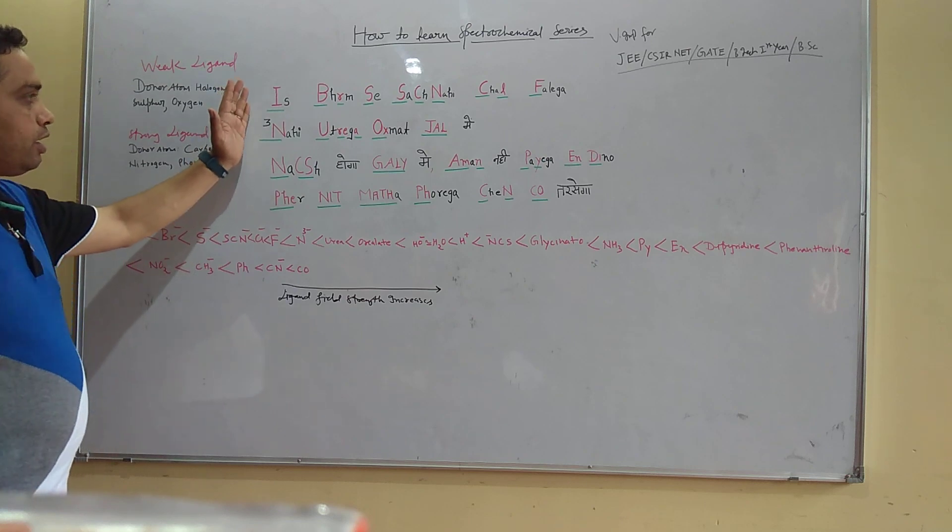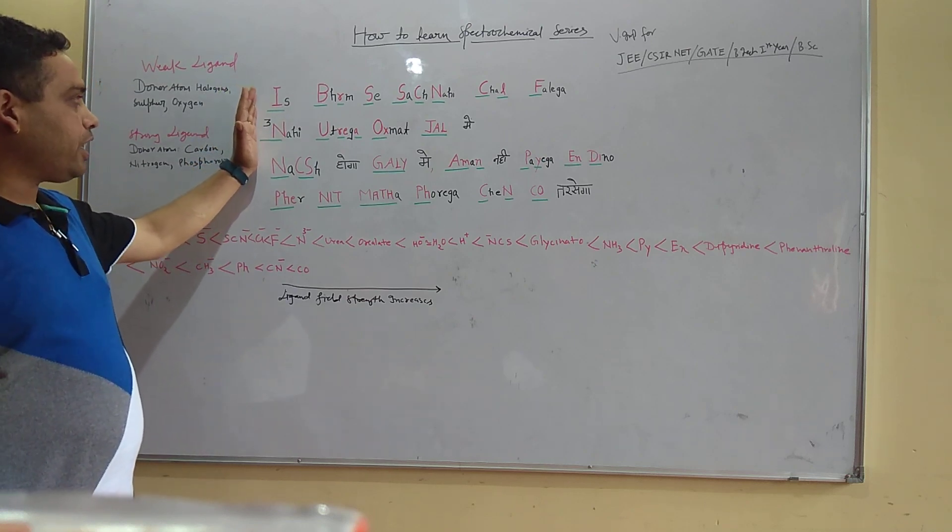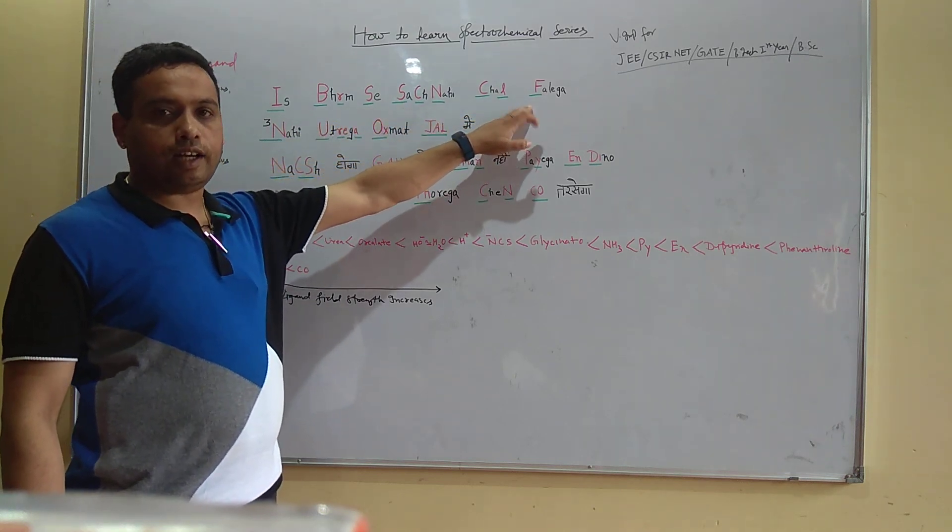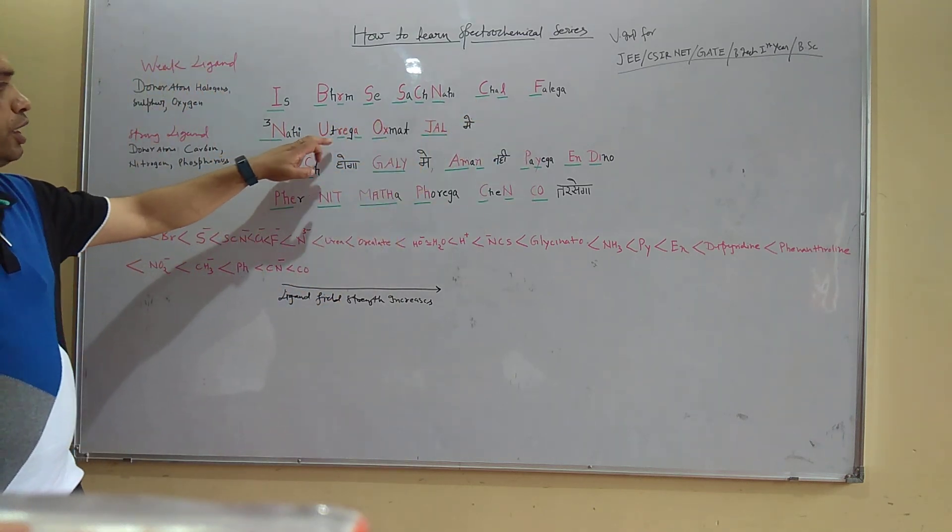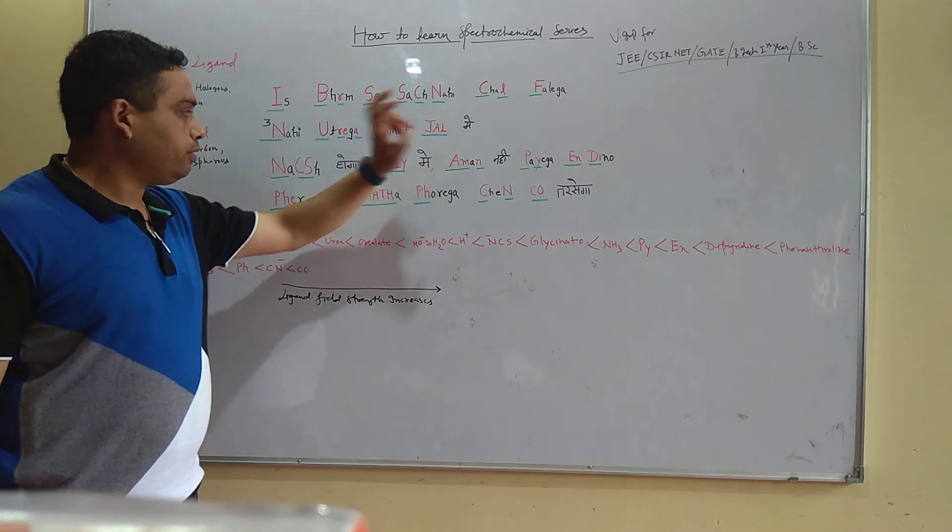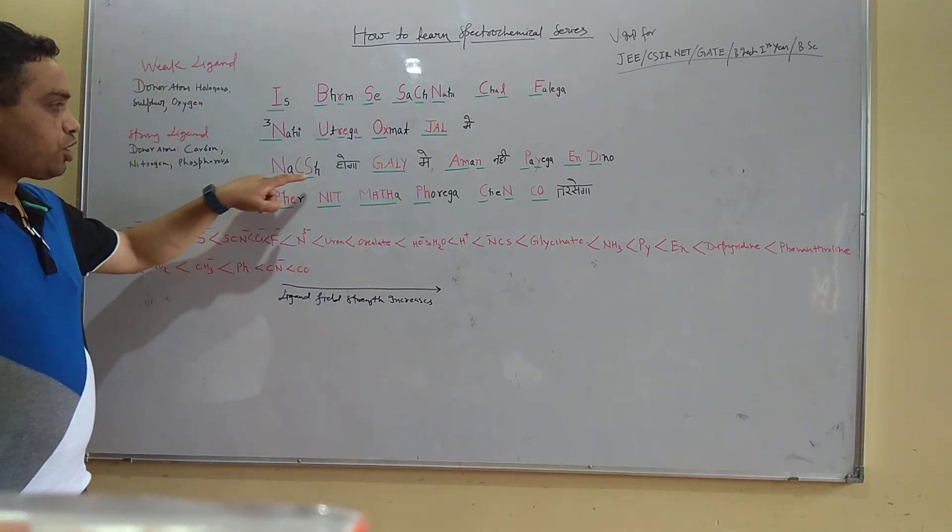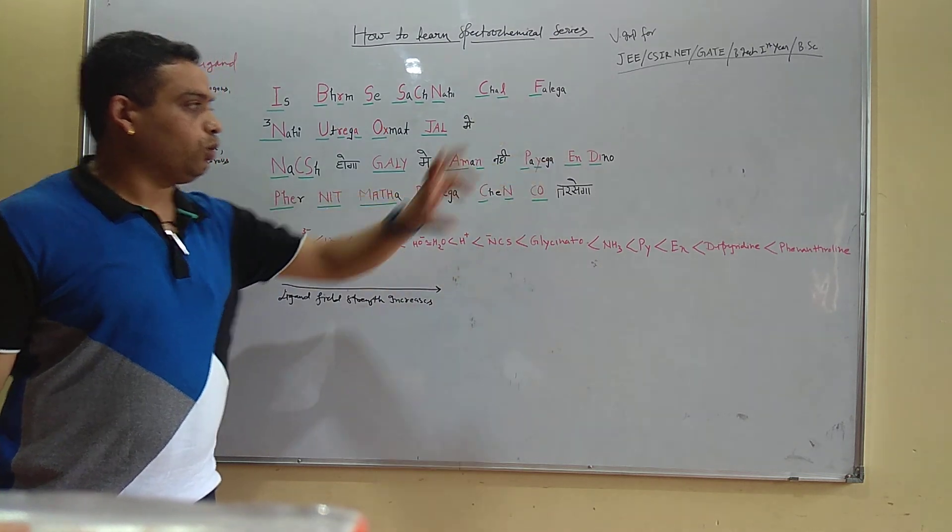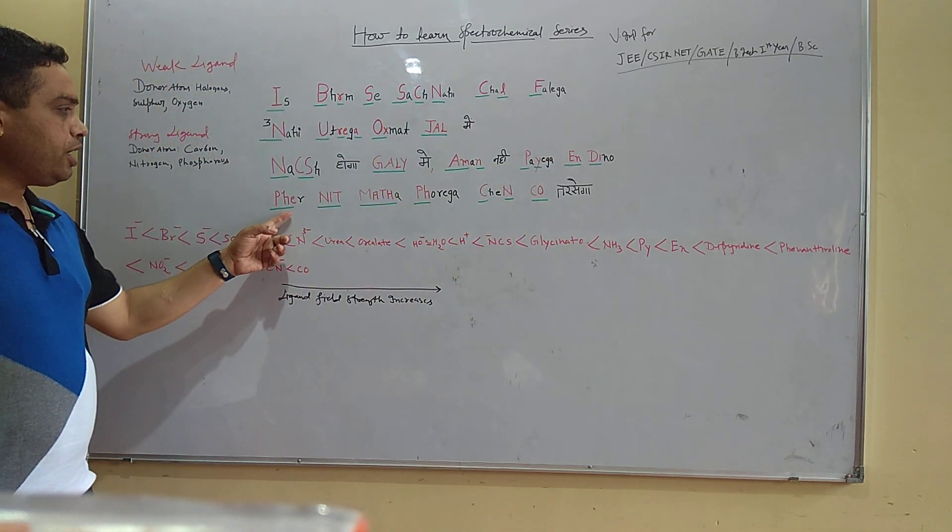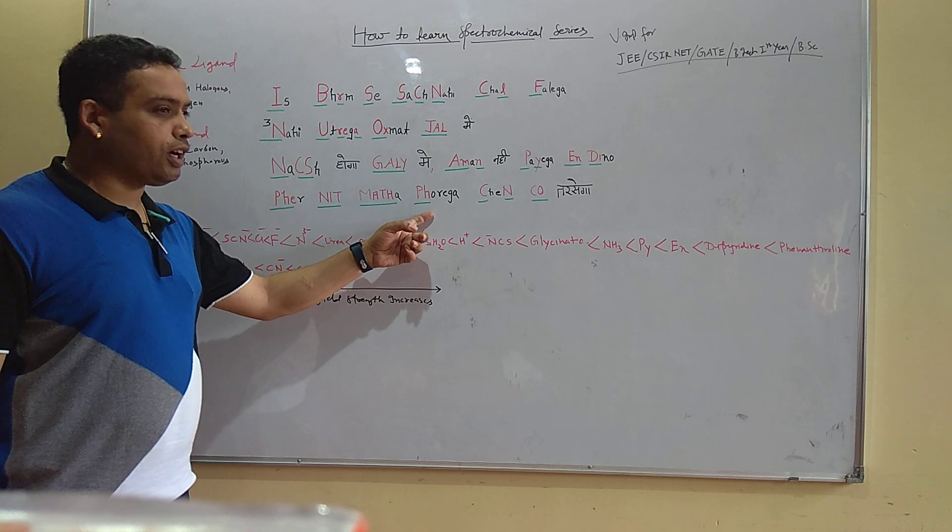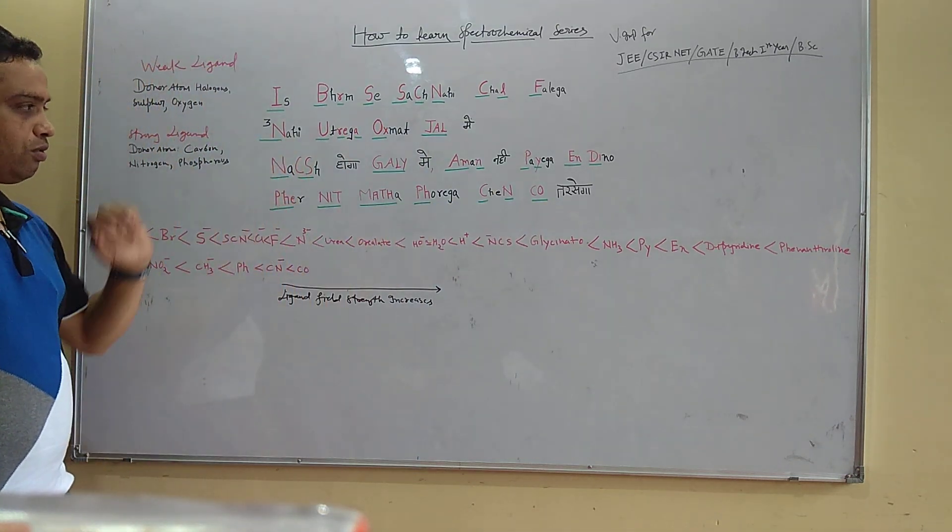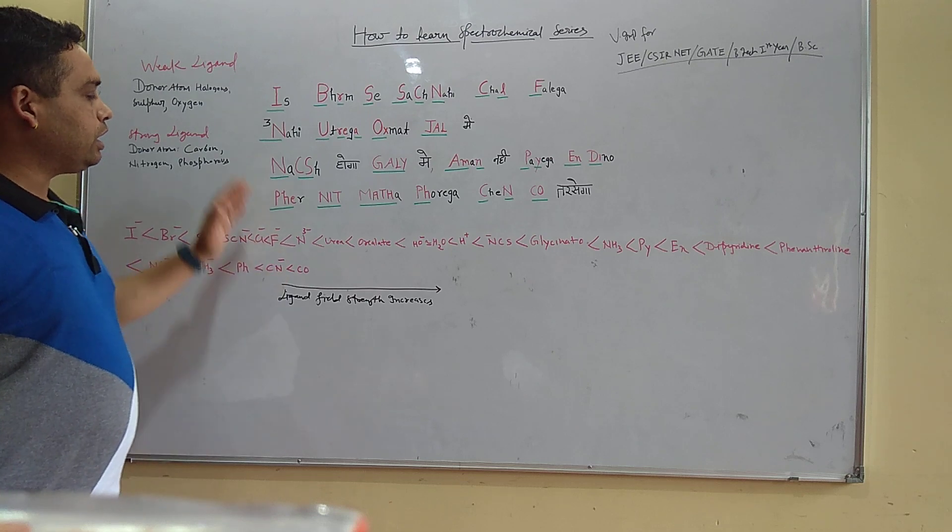The poem is just like that: is brahm se such nahi chal phailega nahi utrega akasmat jal mein naash ho ga gali mein aman nahi paayega indino khir nit maathar chayain ko tharsega.